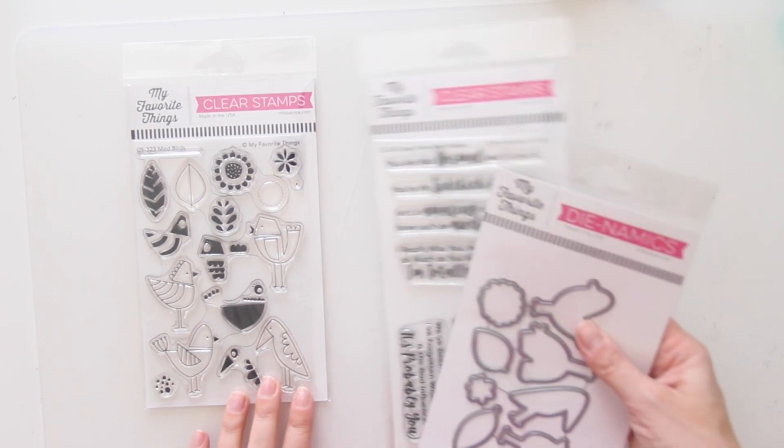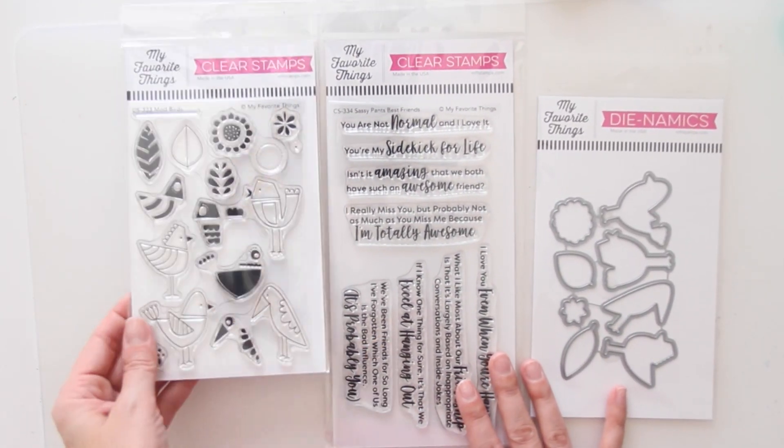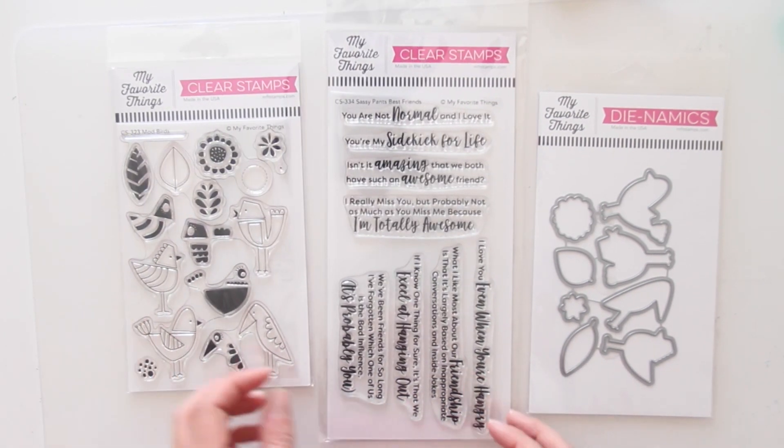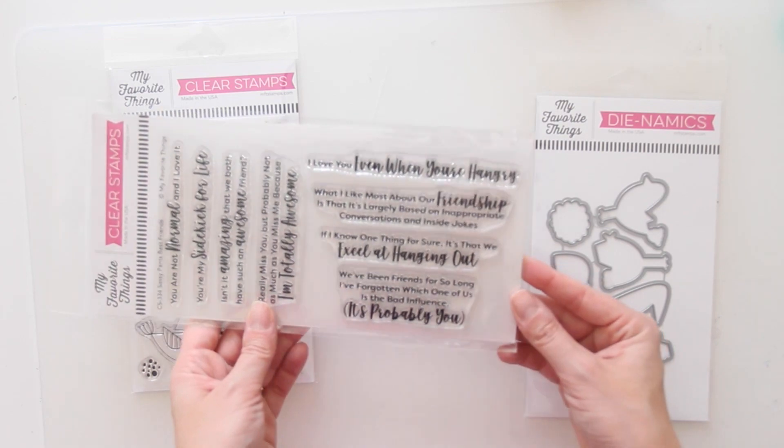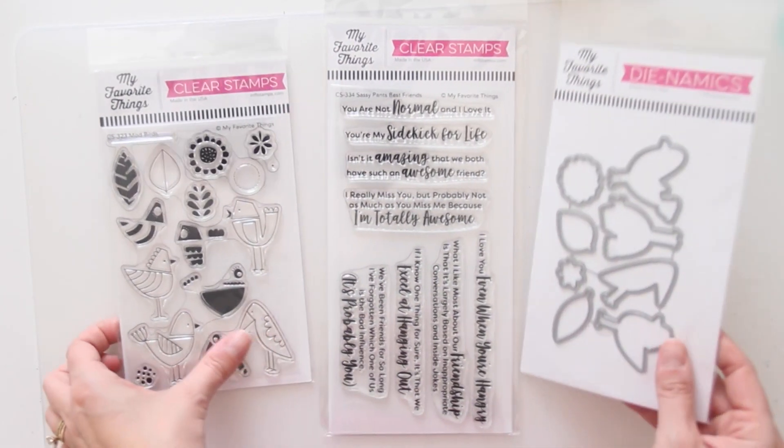Hey there, Katelyn here, and welcome to another video in the Too Many Cards series that Emily Liepart and I have created. Today, we're creating cards using stamps and dies from My Favorite Things. We're using the Mod Birds stamp set, the Sassy Pants Best Friends stamp set, and the Mod Birds coordinating die set.